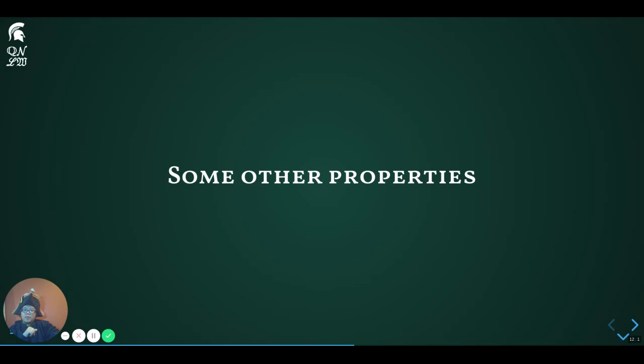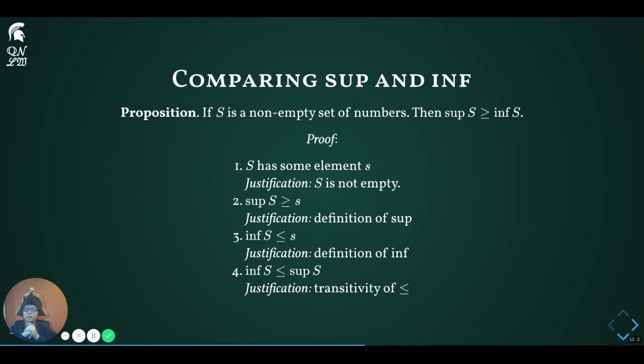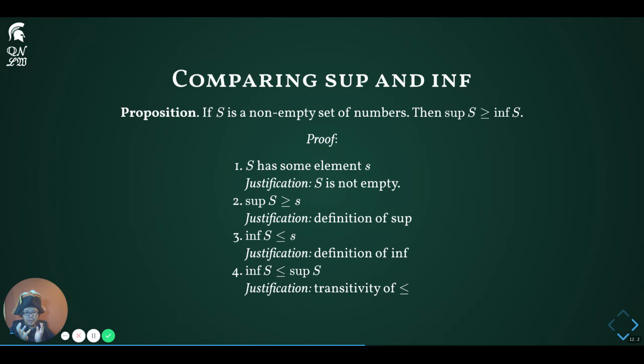Here are some other properties involving the supremum and the infimum. First, a somewhat obvious proposition compares the sup and inf of the same set: if S is a non-empty set, then sup S is greater than or equal to inf S. To prove this, we use the fact that S is non-empty to locate an element. By definition, the supremum is at least as big as that element, and the infimum is no bigger than that element. By transitivity, inf S ≤ s ≤ sup S, proving the conclusion.